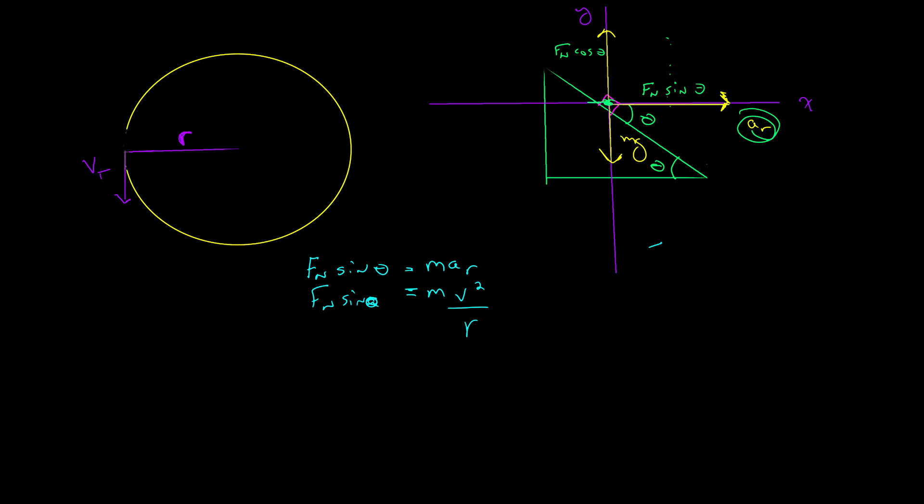Now if we come over and look at our y components, I have an up-down equilibrium. So these are equal. So I can solve for f of n. Now, I'm not going to worry about plugging numbers in. I'm going to go right away and sub this over for f of n.